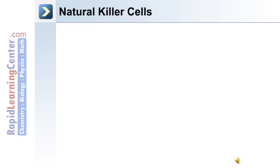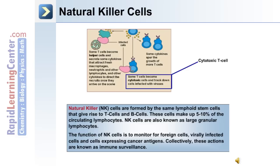The third type of lymphocyte in the lymphatic system are the natural killer cells, or NK cells. These are formed by the same lymphoid stem cells that give rise to T cells and B cells. Natural killer cells make up 5–10% of the circulating lymphocytes and are known as large granular lymphocytes. Their function is to monitor for foreign cells, virally infected cells, and cells expressing cancer antigens. Collectively, these actions are known as immune surveillance.